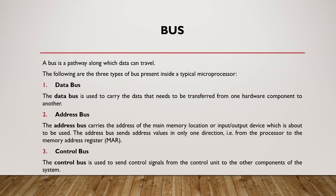A bus is a pathway along which data can travel. There are three types of bus present inside a typical processor. The data bus carries data that needs to be transferred from one hardware component to another. The address bus carries the address of the main memory location or input device which is about to be used; it sends address values in one direction, from the processor to the Memory Address Register. The control bus is used to send control signals from the Control Unit to other components of the system.